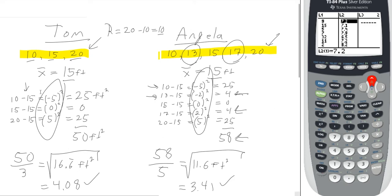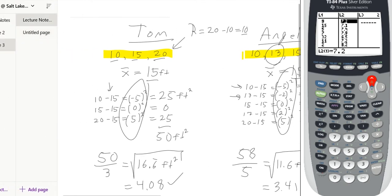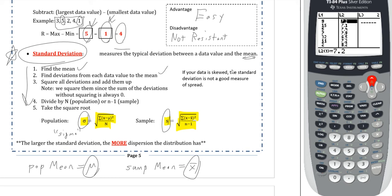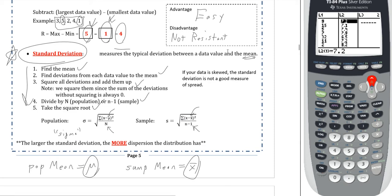So that's the five-step process: find the mean, find the deviations, square them all, divide by however many there are, then take the square root. Notice there is a small difference between the population and sample formulas. For the population standard deviation we divide by N, but for the sample standard deviation we divide by N − 1. That N − 1 is called the degrees of freedom — the amount of data that you have available or can actually use.